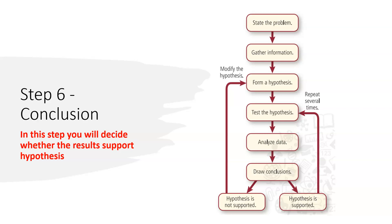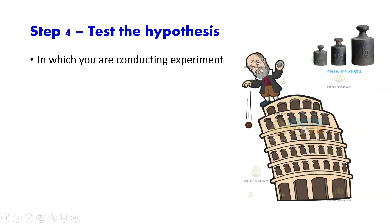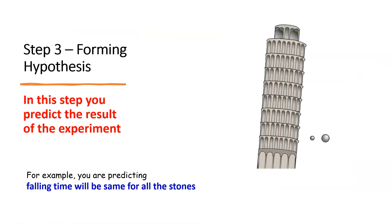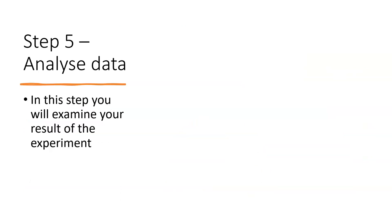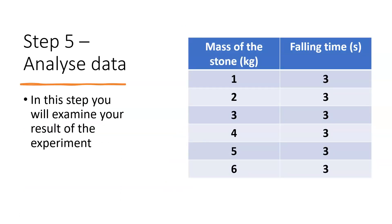If our conclusion supported the hypothesis, we need to repeat the experiment to confirm the result. But suppose different masses are taking different times — for example, the one kilogram object takes five seconds and the five kilogram object takes three seconds. If different masses take different times, then our hypothesis is not correct, because our hypothesis stated the falling time will be the same for all stones. In that case, you need to go back and change your hypothesis.